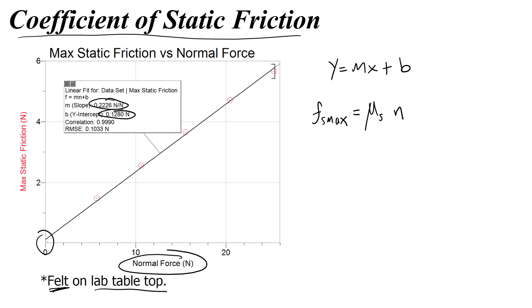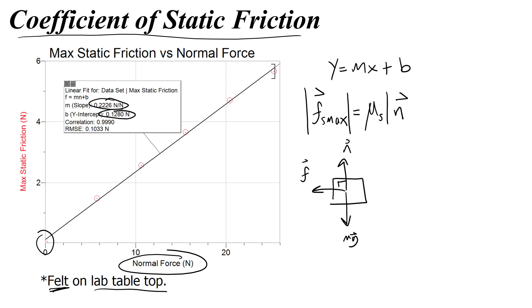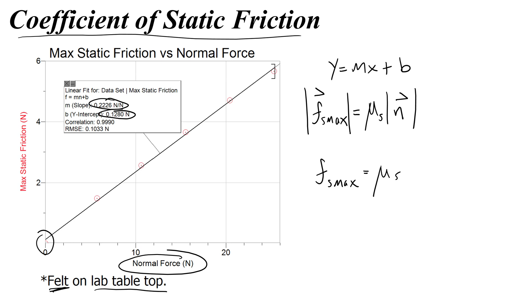Now remember that friction and normal force are vectors, so you could write arrows above them. But because friction and normal force are 90 degrees apart in a free body diagram — normal force up, weight force down, friction to the left — they really have no directional relationship to each other. Instead we can only think about how their quantities, or magnitudes, are related. So we use the absolute value or magnitude of the vectors, which means we don't put arrows above each letter and don't have to worry about angles.